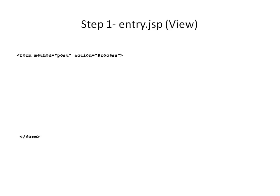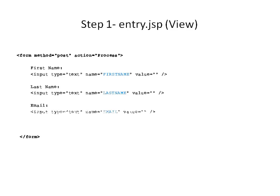We are going to divide our application development into 4 simple steps. In Step 1, we are going to create one Entry.JSP page which will act like a view. It contains a few HTML tags. The first is a Form tag, which has two attributes: Method, with a value of Post, and Action, with a value of Process, pointing to our Process Servlet. It contains three hard-coded text labels: First Name, Last Name, and Email, along with three corresponding text fields. These text fields have name attributes of FirstName, LastName, and Email. This page also contains one Submit button.